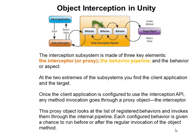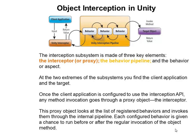The interceptor will then examine the interception pipeline and find out what behaviors are registered. It will pass on the input parameters to the behavior and execute each registered behavior one by one. Then it will invoke the target object passing in the parameters that were passed by the client. The target object will be executed and return. Once it returns, it will be returned to the behavior. The behavior will get a chance to execute once again, and finally the interceptor will receive the call and return the value to the client application.